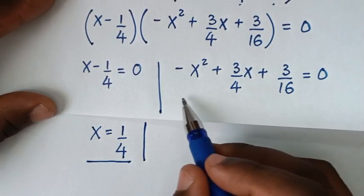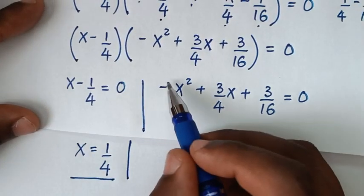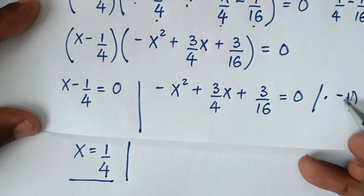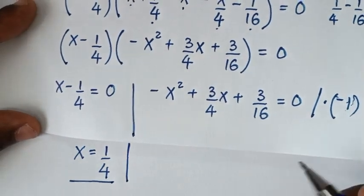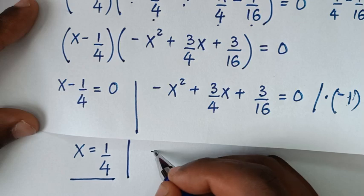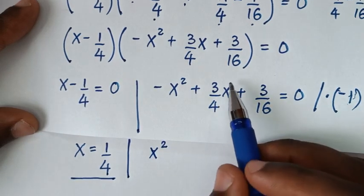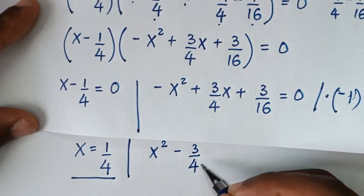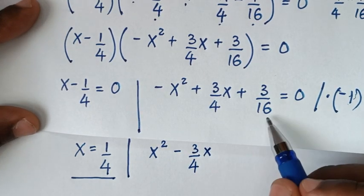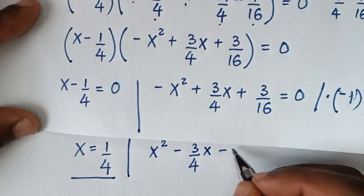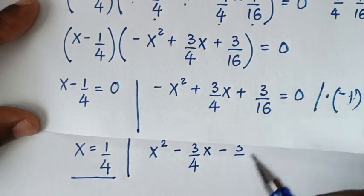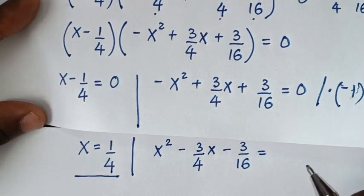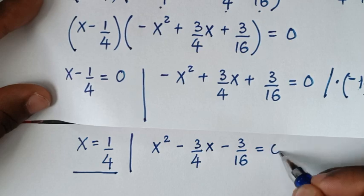Then from the second solution, we start by removing the negative by multiplying the whole equation by negative 1. So negative x squared times negative 1 gives positive x squared, positive 3x over 4 times negative 1 gives negative 3x over 4, and positive 3 over 16 times negative 1 gives minus 3 over 16, equal to 0.